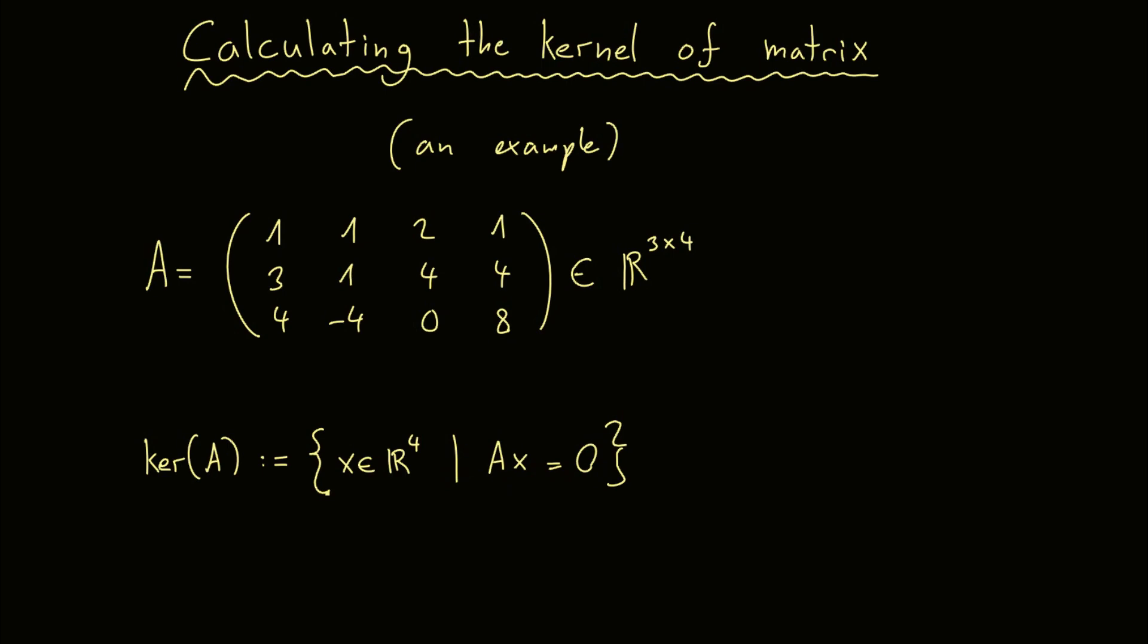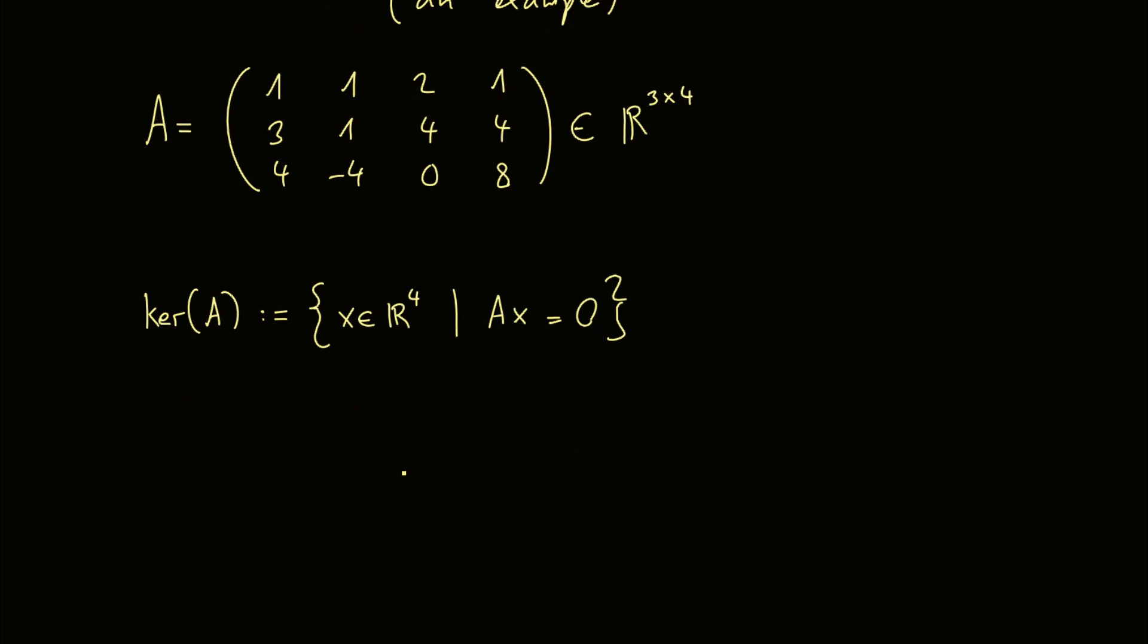And as you can see, this is just a system of linear equations. So we can calculate the kernel by solving the system of linear equations given by the matrix and the right hand side 0. Therefore, this means that we can do row operations on the system of linear equations here, and they don't change the solution set. And we want the solution set here for the kernel. So we can just do row operations on this matrix inside the kernel here, and we don't change the kernel.